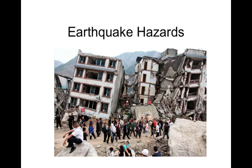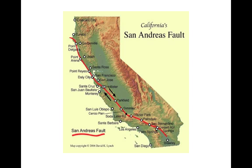The first set of hazards we're going to talk about are the ones caused by earthquakes. If we remember from our earthquake unit, the San Andreas Fault runs through the state of California. It is a huge fault that causes major earthquakes, and a lot of these natural hazards are a result of those earthquakes.